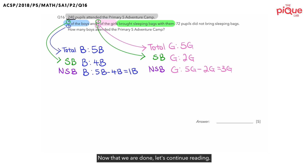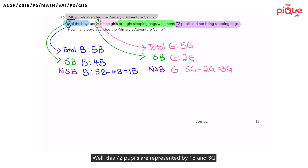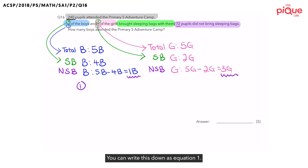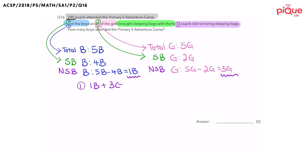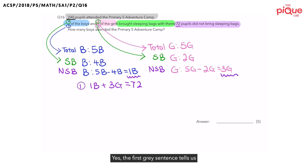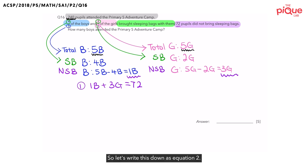Now that we are done, let's continue reading. 72 pupils did not bring sleeping bags. These 72 pupils are represented by 1B and 3G, since they did not bring a sleeping bag. We can write this down as equation 1. Can we form another equation? Yes — the first sentence tells us that there were a total of 240 students, which comprises 5B and 5G. So let's write this down as equation 2.